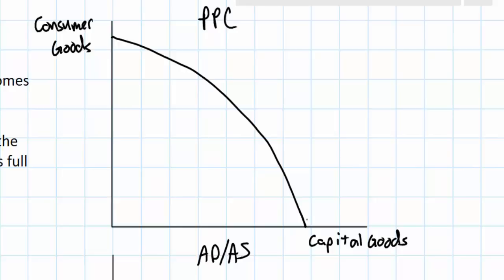There is a production possibilities curve that shows the potential output of a nation if it uses all of its resources efficiently. When a country is producing at a point inside — call this point A — its production possibilities curve, this implies it is not using all of its resources efficiently. There is excess capital, labor, and land resources not being used efficiently. Unemployment is high and the country is producing below its potential full employment level.